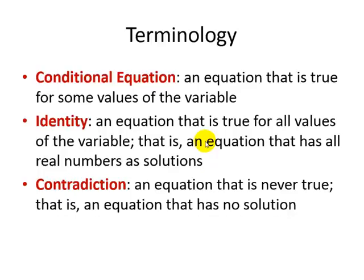A contradiction is an equation that is never true — that is, an equation that has no solution. We cannot necessarily tell which type of equation we have until we go through the process of solving it.